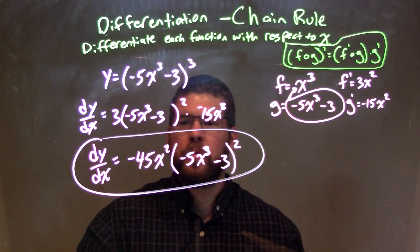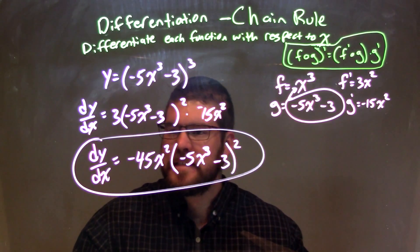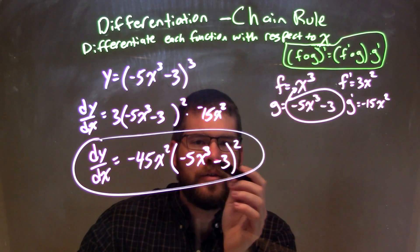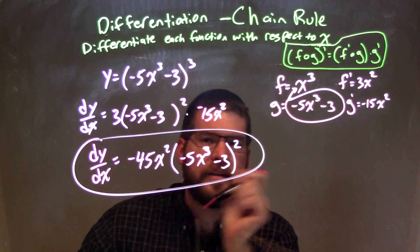I multiply the negative 15x squared by the 3 to get my final answer: dy/dx is equal to negative 45x squared times (negative 5x to the third minus 3) to the second power.